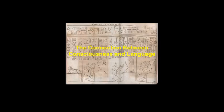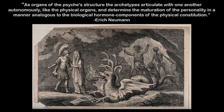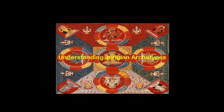One of the central themes of this book is the formation of the ego within each person. Given that the ego isn't actually real, how does it arise in each person? The ego can best be described as a special relationship between internal archetypes that evolve with one another as the individual matures. As Neumann writes, the archetypes articulate with one another autonomously, like the physical organs, and determine the maturation of the personality, in a manner analogous to the biological hormone components of the physical constitution. An understanding of archetypes is important for understanding depth psychology.